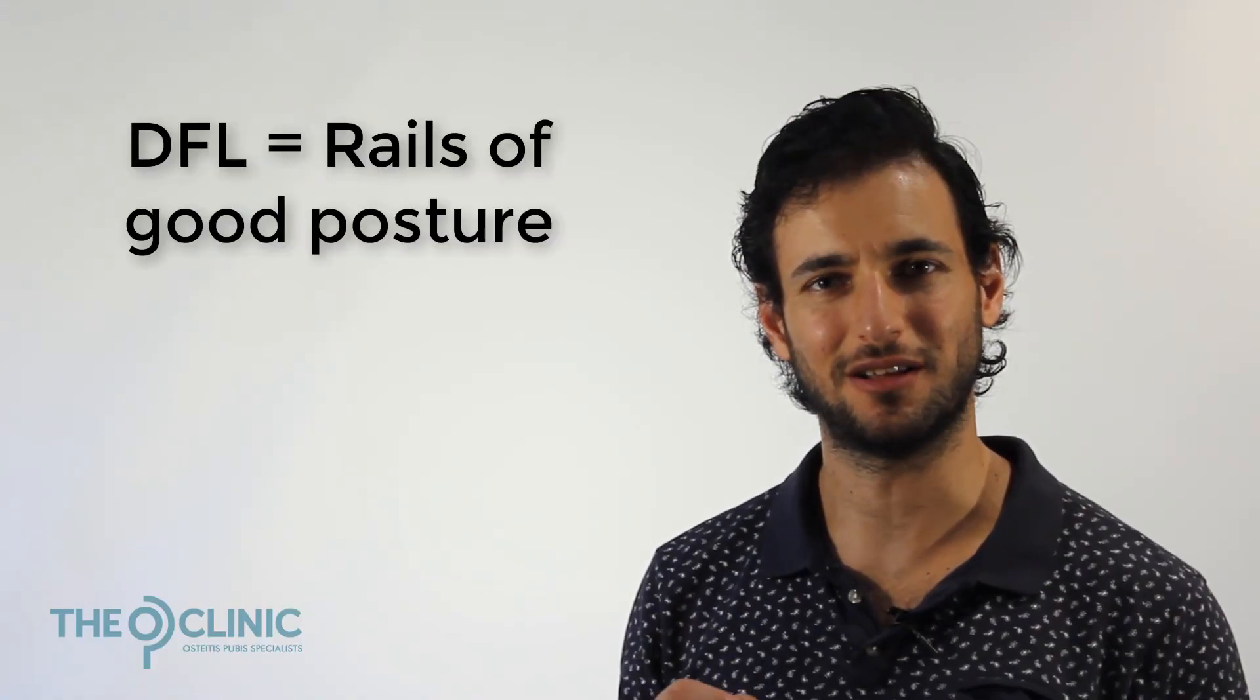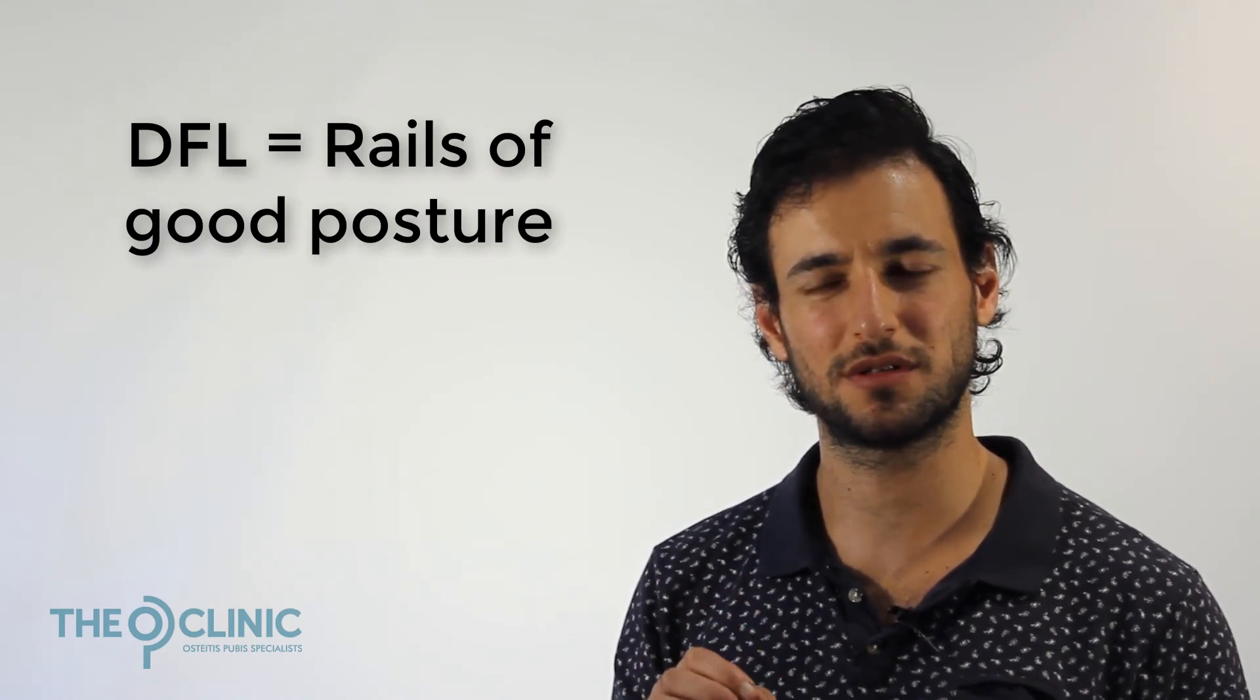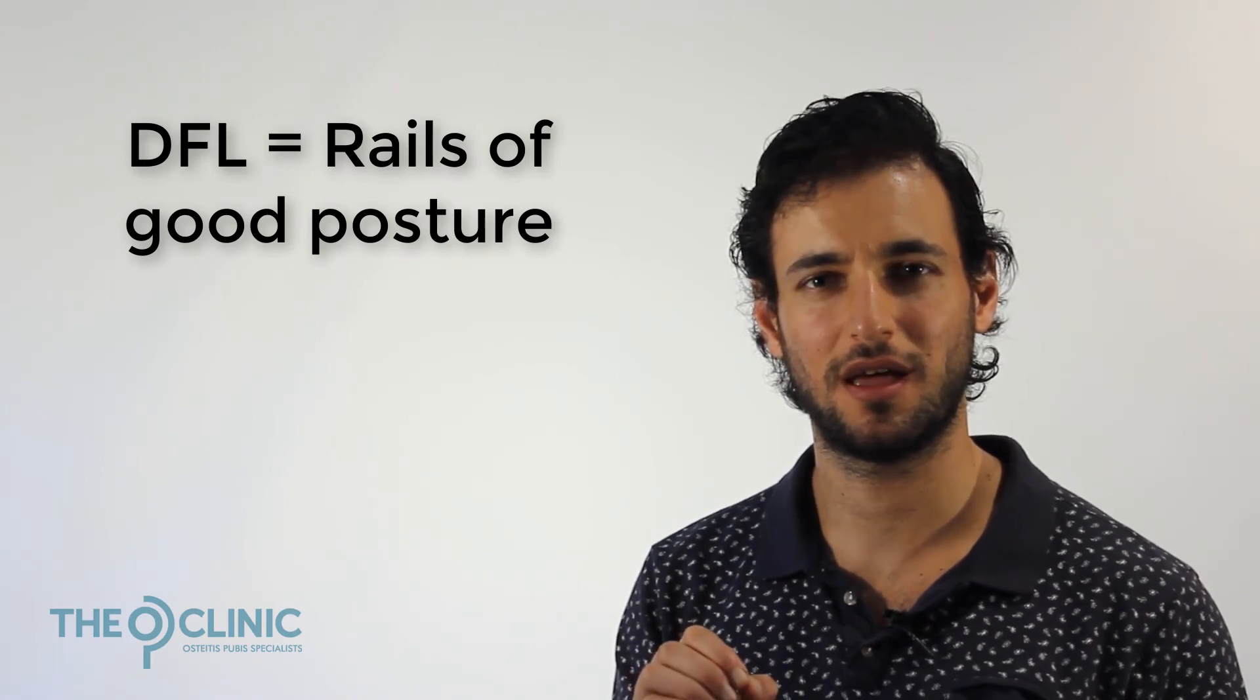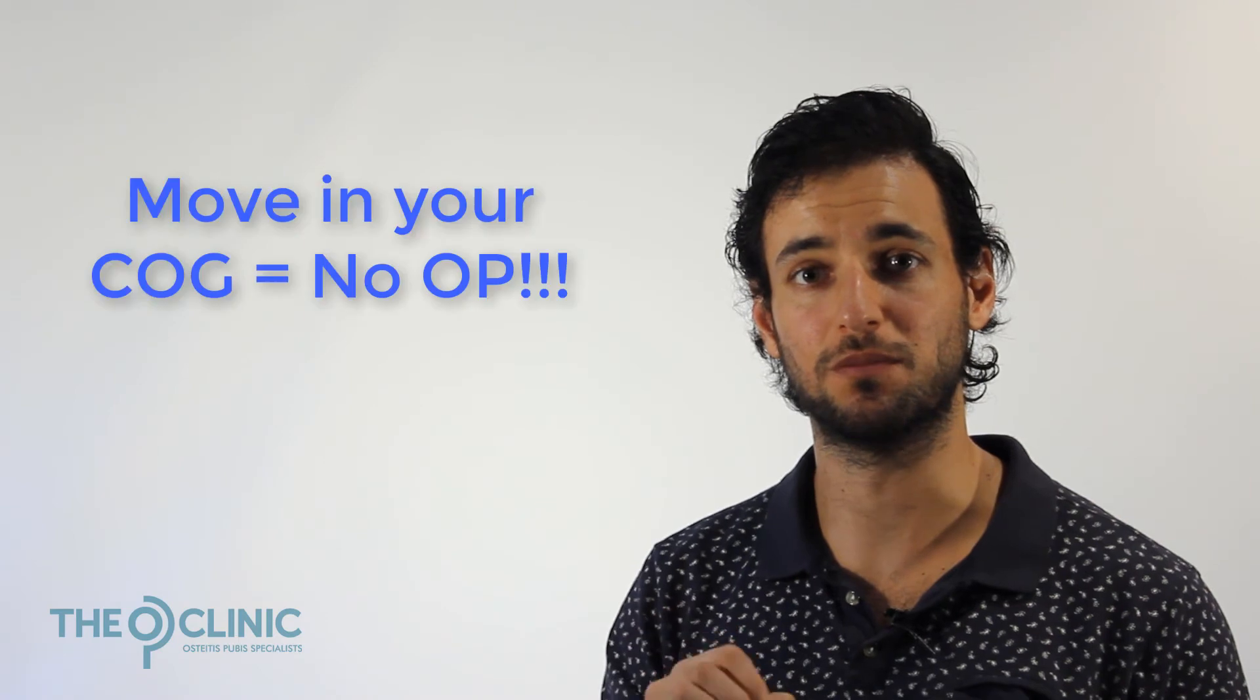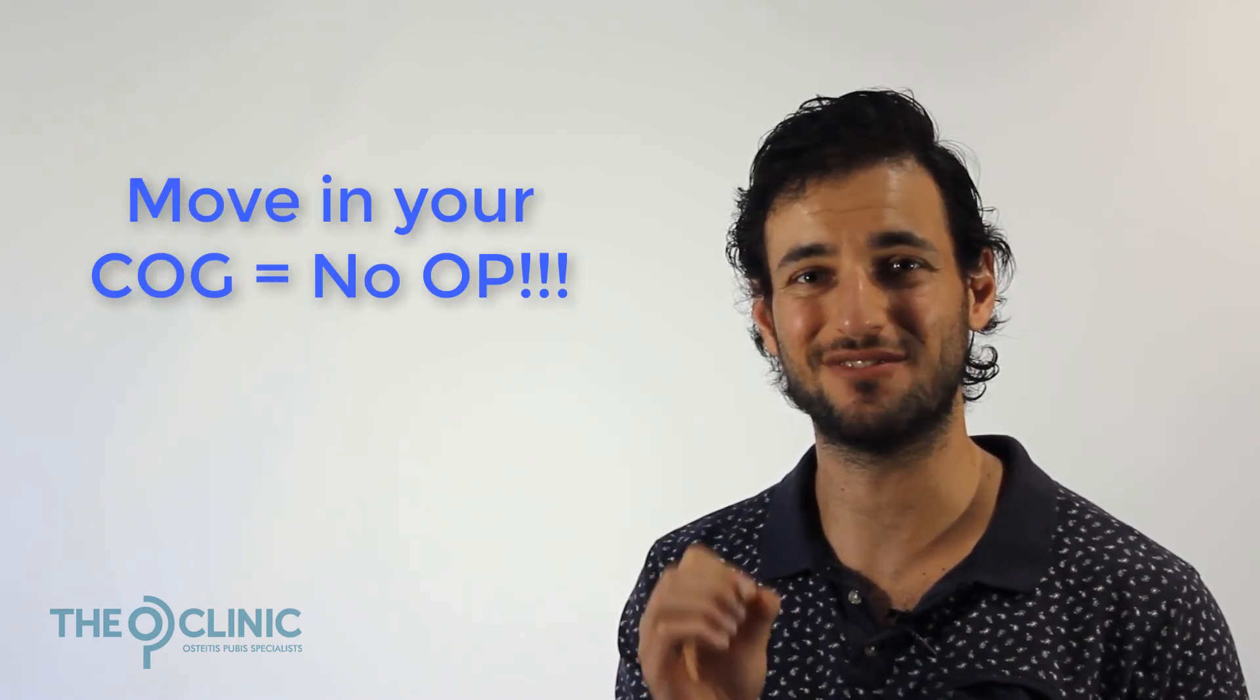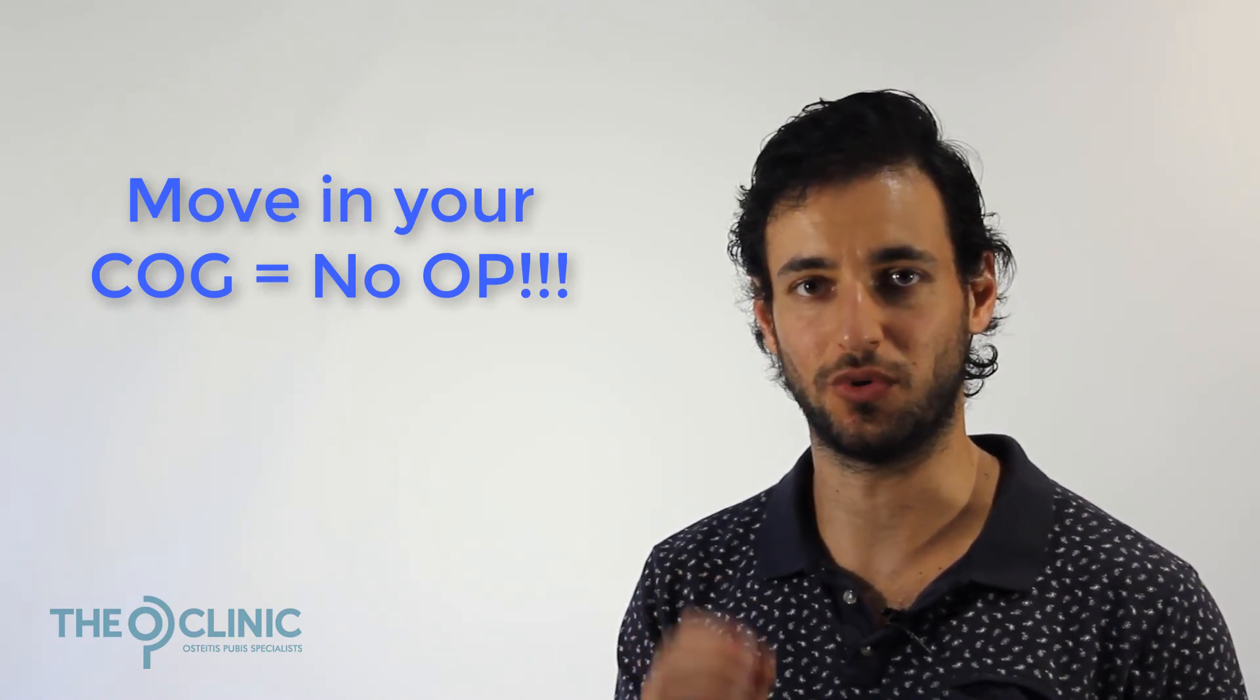I like to think of your DFL as the rails of good posture. When it's active, your joints, the line of your body, your center of gravity is held in check. The key is, as we'll discuss in the next video, being able to move within your center of gravity. Because if you can do this, then you can evenly dissipate load up and down your body without overloading specific joints.